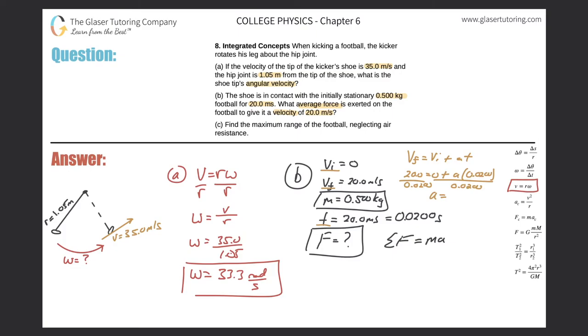We simply get the acceleration. It'd be 20 divided by 0.02, and we get a value of 1000 meters per second squared. Now we can take this and plug it in to find the force. The average force should be the mass, 0.500 kilograms, multiplied by 1000 meters per second squared, and we get 500 newtons. That's the average force. Now letter C.